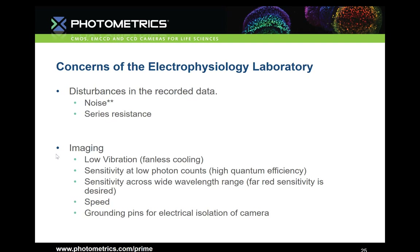Imaging in the electrophysiology lab has many of the same concerns. Instrumentation used to image must fit certain qualifications. First, low vibration to reduce the amount of vibrational noise added to the system and hence the recorded data. Any imaging system must be extremely sensitive at low photon counts and across a wide wavelength range to capture really low fluorescing fluorophores that may emit at a non-optimal visible wavelength. Some of these events are highly dynamic, so a camera with fast speed can go a long way in visually capturing those events. Finally, grounding pins embedded on the camera will help with isolation.